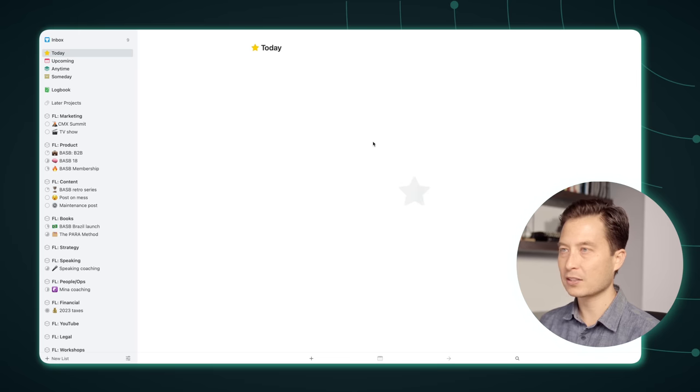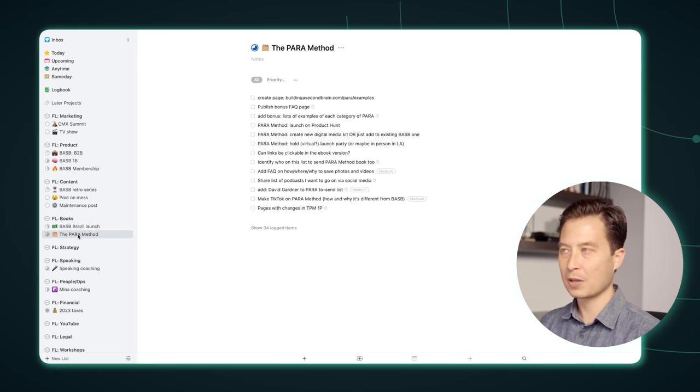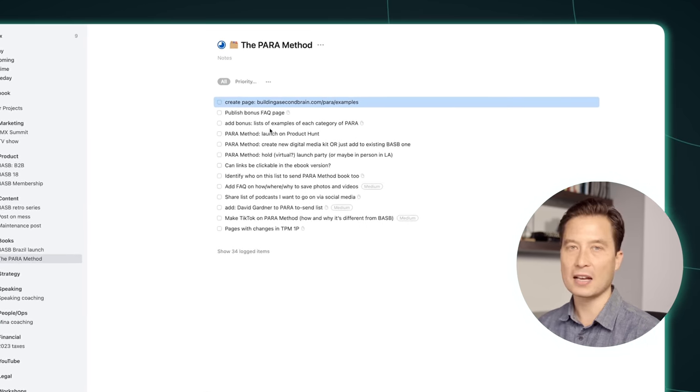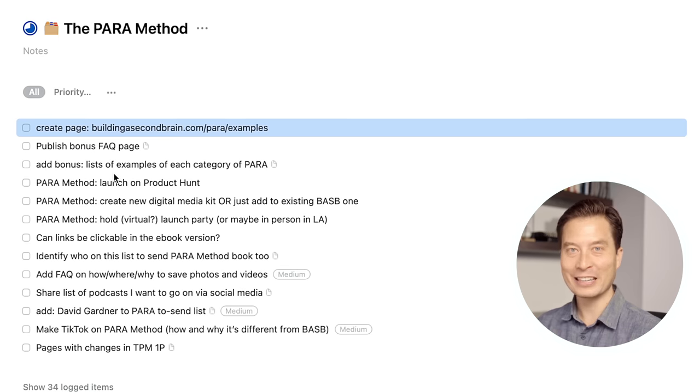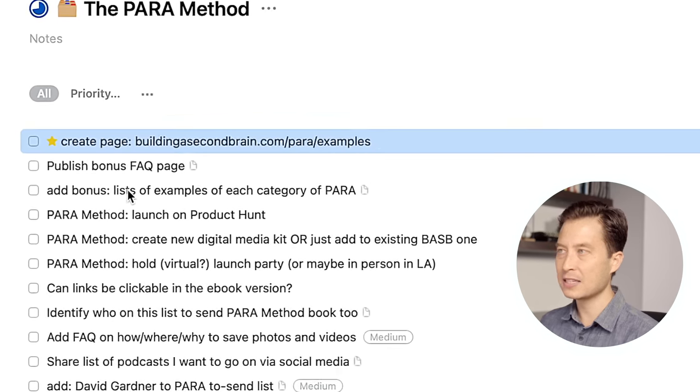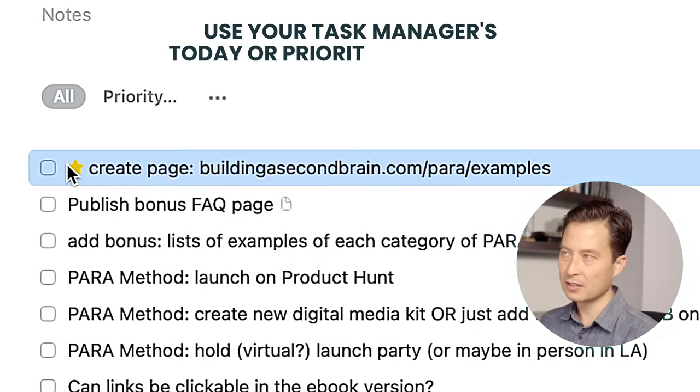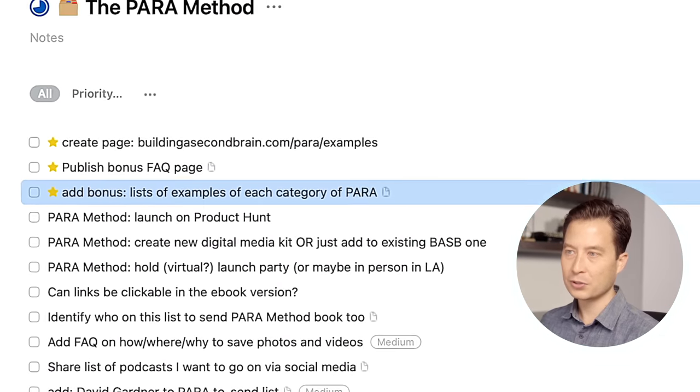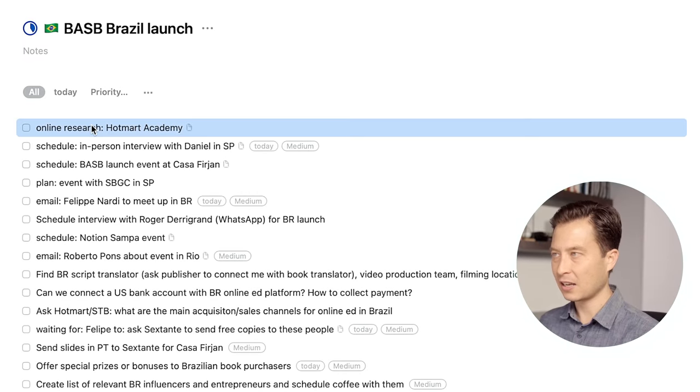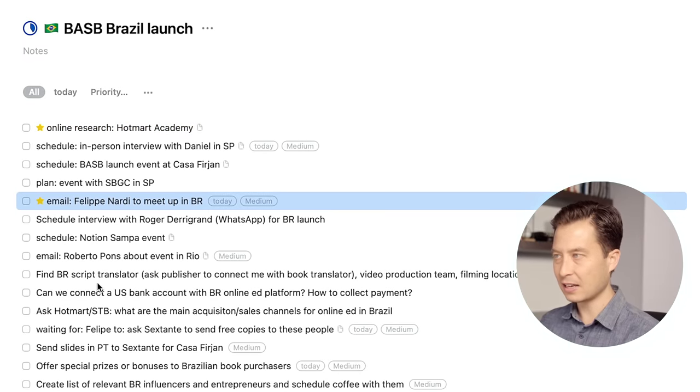You're probably wondering what is the end point of all this? If I head over back to my task manager, and let's say within the paramethod project, I've identified these top three tasks that I actually want to do. Eventually at some point you have to stop organizing things and actually do them. Once I've made that decision, I can select them and just hit command T. See this little tiny yellow star that appears. Let's do that for these top three, and then the BASB Brazil launch project, and then finally the third priority for the week, which is our B2B initiative.